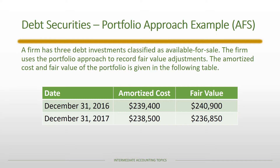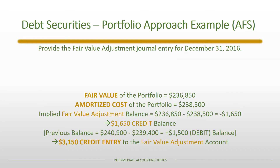On December 31st, 2017, the amortized cost was $238,500 and the fair value had dropped to $236,850. To figure out the fair value adjustment journal entry for December 31st, 2016, we calculate the portfolio's fair value of $236,850 versus the amortized cost of $238,500. This implies a negative balance in the fair value adjustment account — exactly the same approach as for individual securities, just aggregated. Because it's an asset with a negative balance, there should be a $1,650 credit balance in the fair value adjustment account.